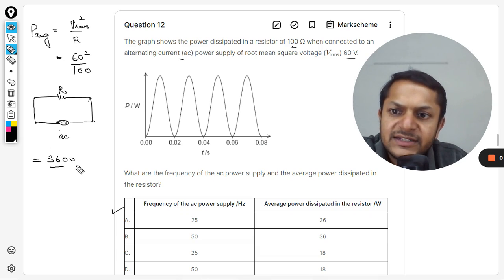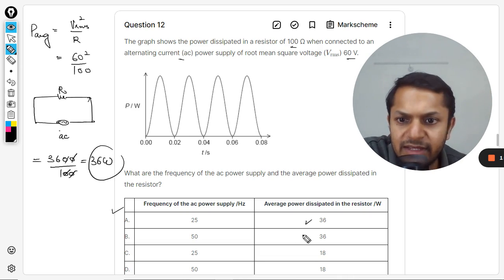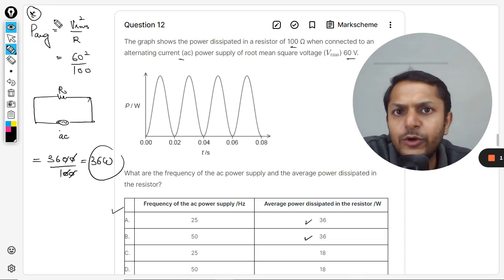And 60 square will be 3600 divided by 100. Clearly 36 watt should be the average power dissipated. So the answer will be either A or B. Just remember this simple formula, but we are only going to use the root mean square value here and you would be getting the average value there.